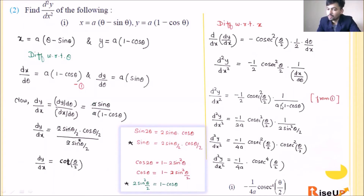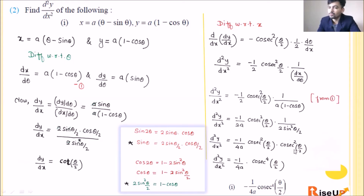Now 1 − cosθ can be written as 2·sin²(θ/2), so we get 1/(2·sin²(θ/2)). Multiplying 2a by 2 gives 4a. So d²y/dx² = −1/(4a·cos²(θ/2)·sin²(θ/2)), which equals −(1/4a)·cosec²(θ/2)·cosec²(θ/2) = −(1/4a)·cosec⁴(θ/2). This is our final answer — the second order derivative.